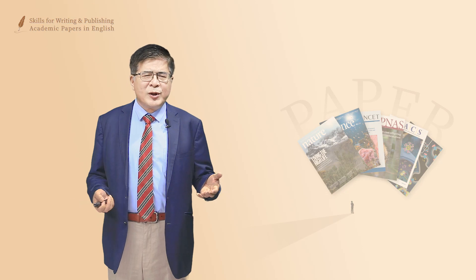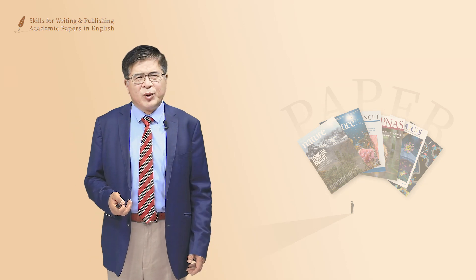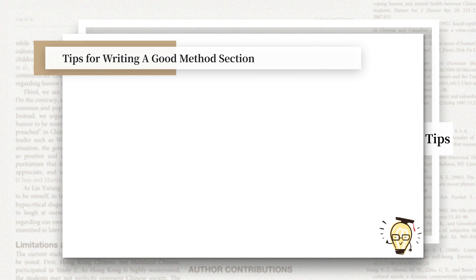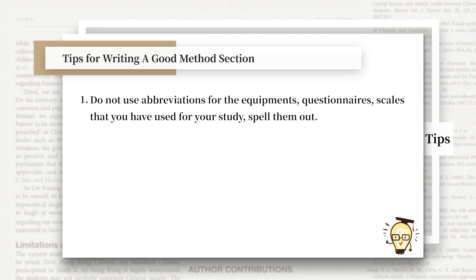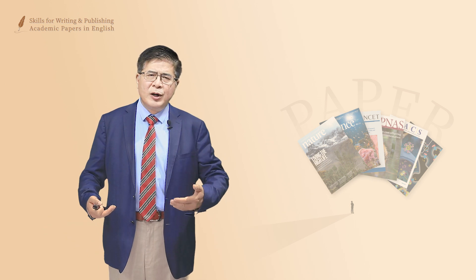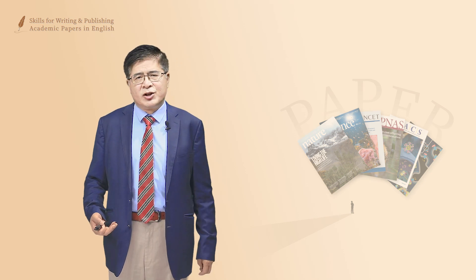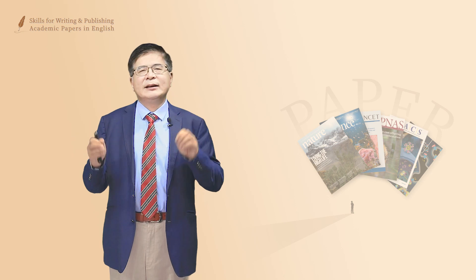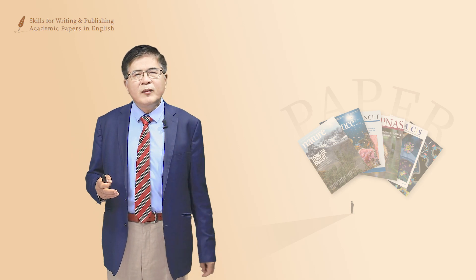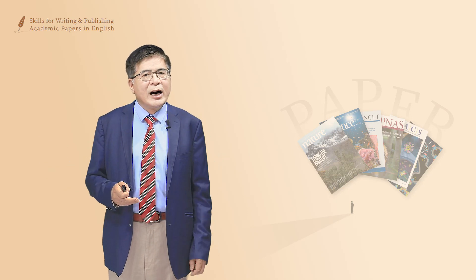The important thing is the tips for writing a good method section. First, do not use abbreviations for equipment or questionnaire scales — spell them out. You need to have reader awareness and not assume everyone knows what you are referring to. Spell out the full term the first time it appears; after that, you may use abbreviations. That is very important.